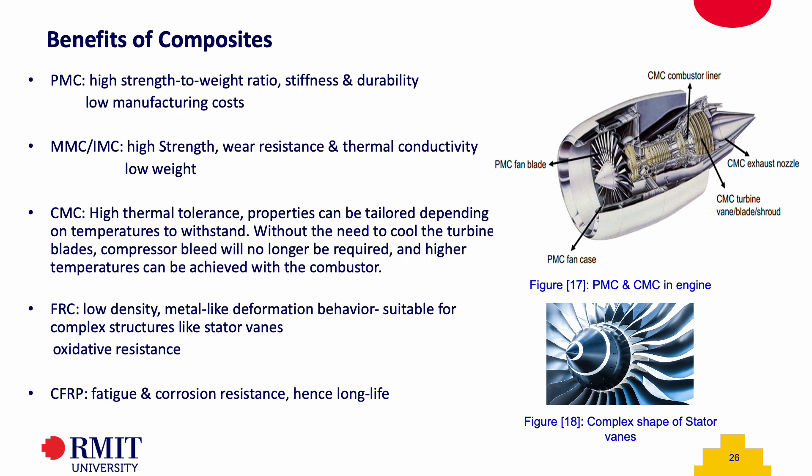Metal matrix composites or intermetallic matrix composites are highly wear resistant and have high thermal conductivity at very low weight. Ceramic matrix composites are very tolerant to heat, and these properties can be tailored depending on the temperatures they have to withstand. For example, without the need to cool turbine blades, compressor bleed will no longer be required and higher temperatures can be achieved in the combustor if ceramic matrix composites are used. Fiber reinforced ceramics have very low density and metal-like deformation behavior, suitable for making complex structures such as stator vanes. They are also resistant to oxidation and can be used in parts of the engine where oxidation occurs such as the bypass area. Carbon fiber reinforced plastics have high fatigue and corrosion resistance, providing a long service life and are currently used in many different aircraft.